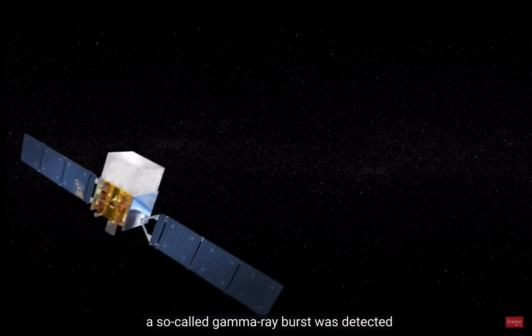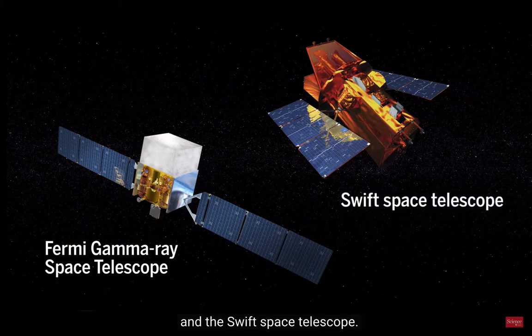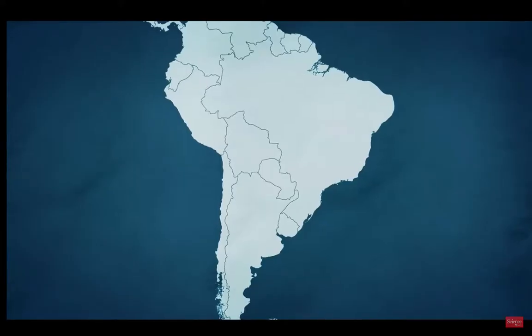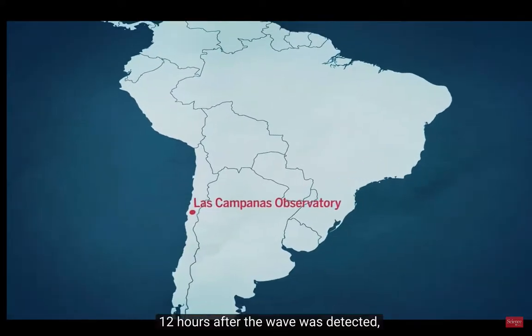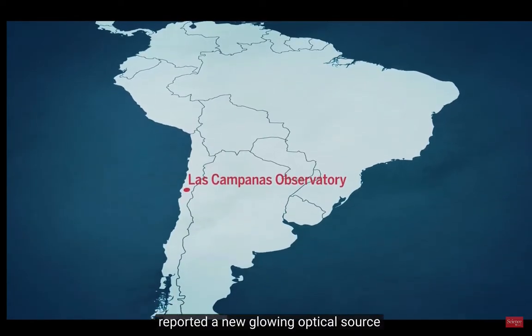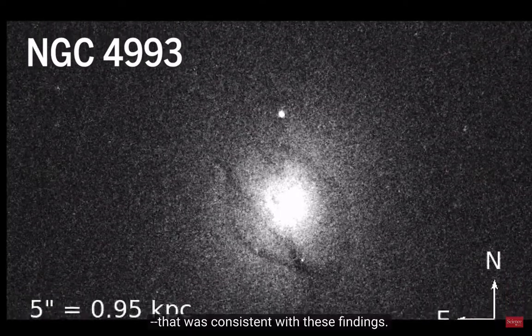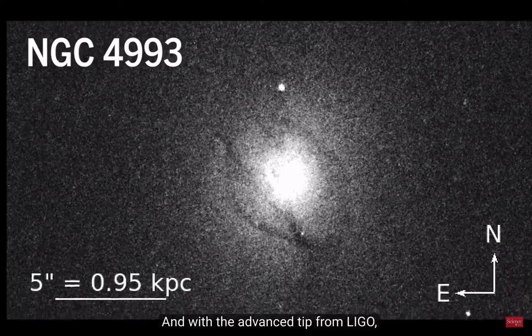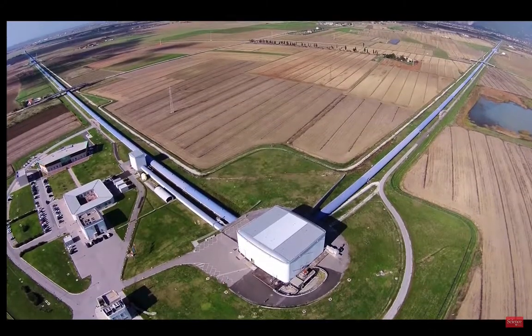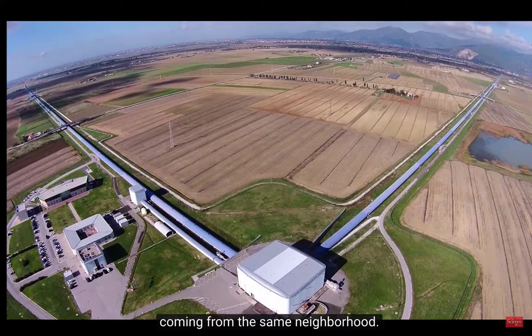Just two seconds later, a gamma ray burst was detected by NASA's orbiting Fermi Gamma Ray Space Telescope and its Swift Space Telescope. Twelve hours after the wave was detected, a team from Las Campanas Observatory in Chile reported a new glowing optical source in galaxy NGC 4993 that was consistent with these findings. And with the advanced tip from LIGO, both radio and X-ray emissions were found a few days later, coming from the same neighborhood.